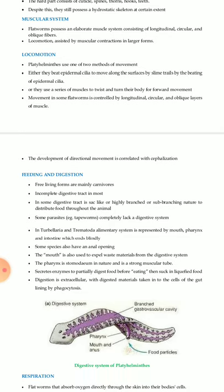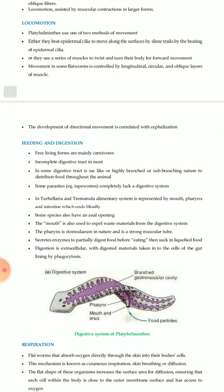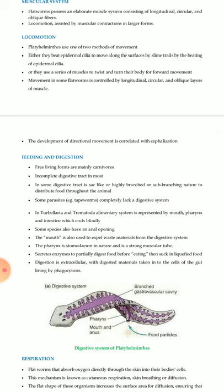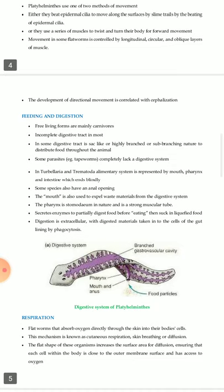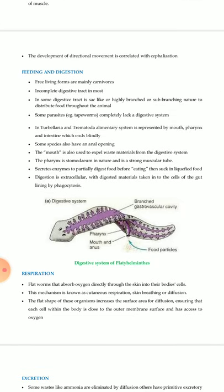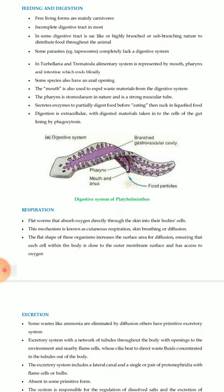Muscular system: Platyhelminthes possess an elaborate muscular system consisting of longitudinal, circular, and oblique fibers; locomotion is assisted by muscular contractions in larger forms. Locomotion: Platyhelminthes use one of two methods of movement — either they beat epidermal cilia to move along the surface by slime trails, or they use a series of muscles to twist and turn their body for forward movement. Movement in some Platyhelminthes is controlled by longitudinal, circular, and oblique muscle layers. Directional movement is correlated with cephalization.